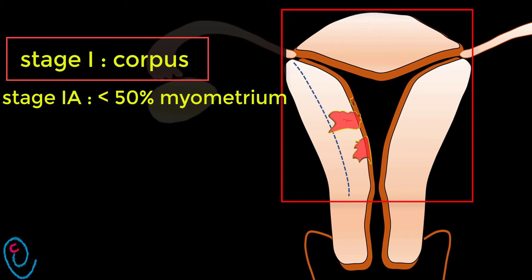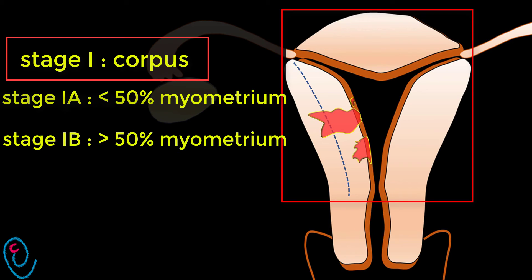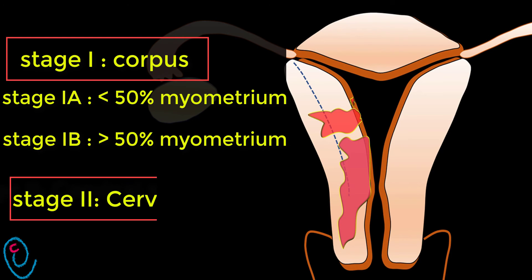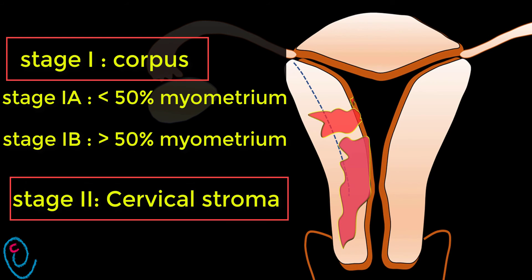When the tumor involves 50% of the myometrium or more, it becomes Stage 1B. When the tumor invades the cervical stroma, it becomes Stage 2.